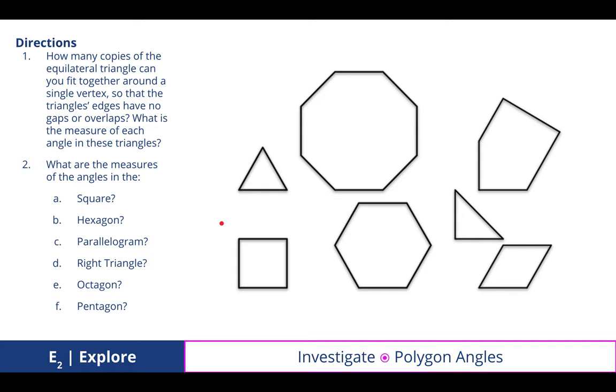Then we started looking at different polygons and their angles, and we discovered that we can make various copies of, for example, equilateral triangles that we can fit together around a single vertex so that the triangle's edges have no gaps or overlaps. We noticed that we can use a 60-60-60, an equilateral triangle.